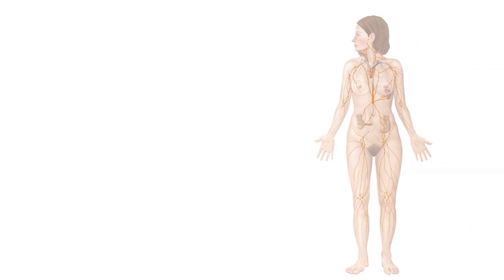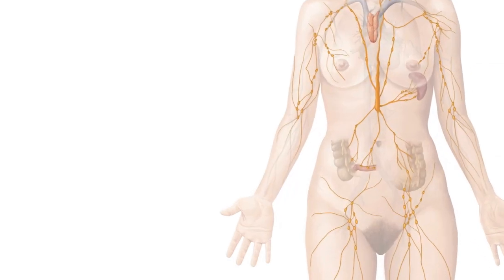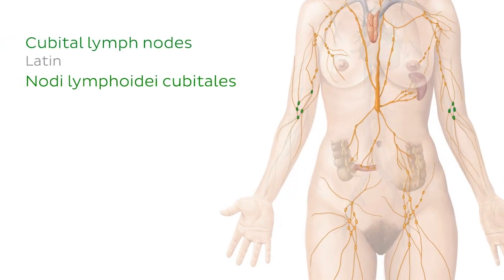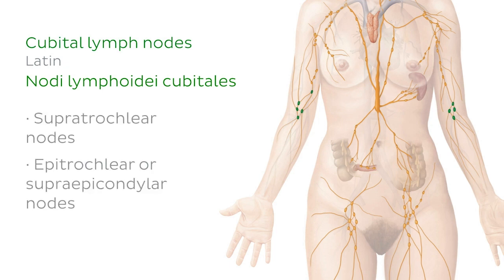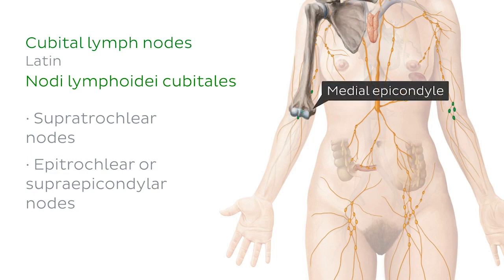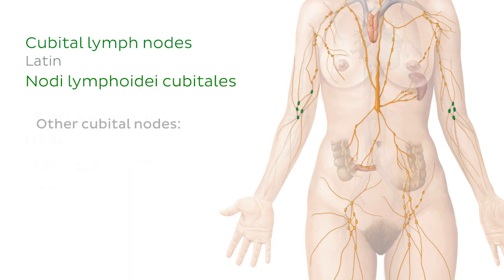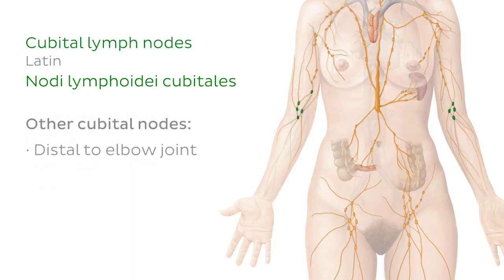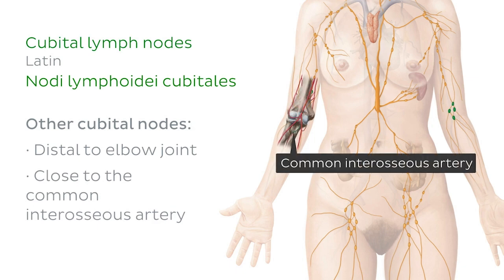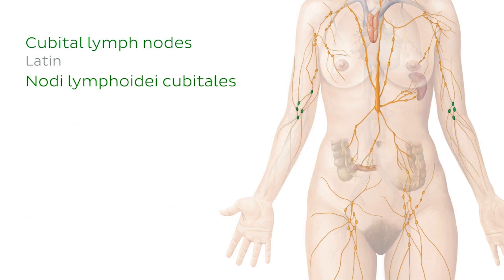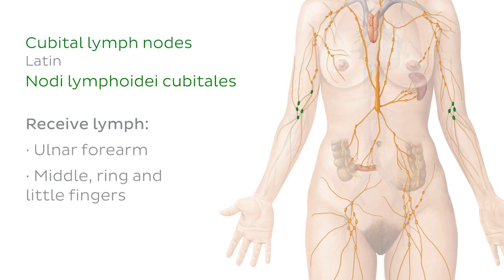Continuing distally along the upper limb, we also have another small group of lymph nodes known as the cubital lymph nodes. These mainly refer to the supratrochlear nodes, also known as the epitrochlear or supraepicondylar nodes, which are located close to the medial epicondyle of the humerus. Other cubital nodes may be located distal to the elbow joint, close to the common interosseous artery. Cubital nodes receive lymph drained from superficial portions of the ulnar forearm as well as the middle, ring, and little fingers.